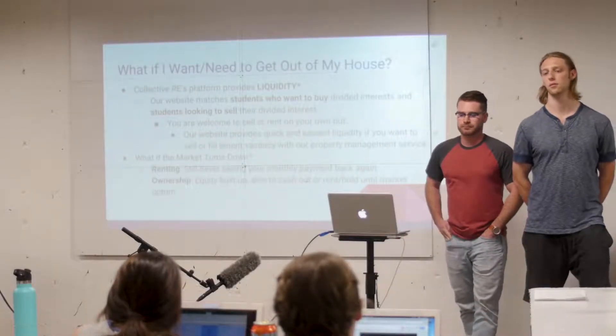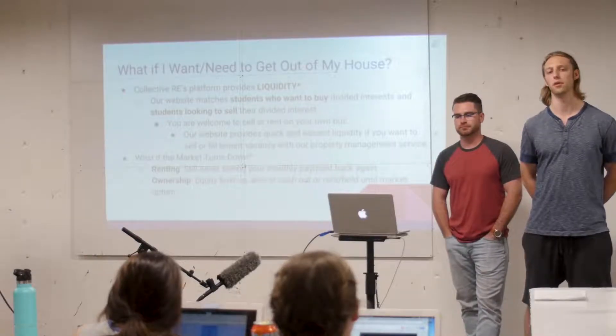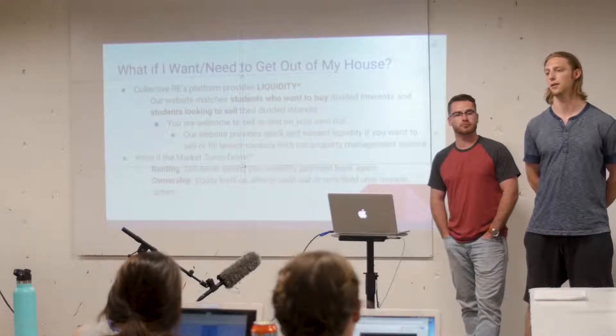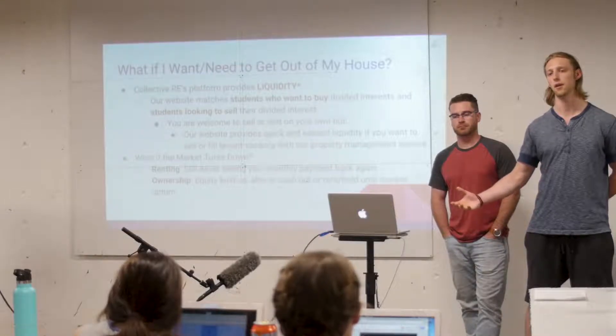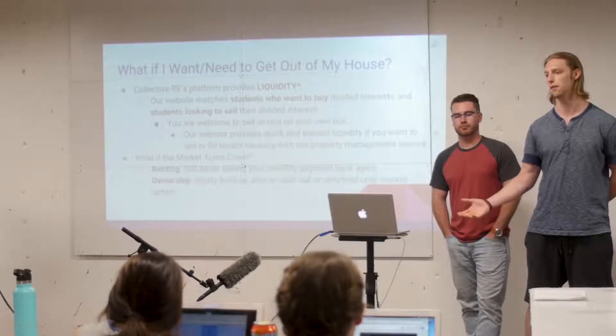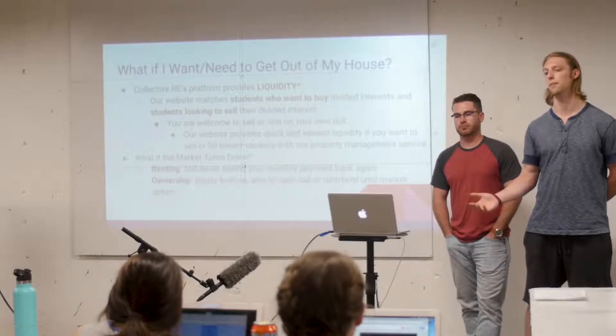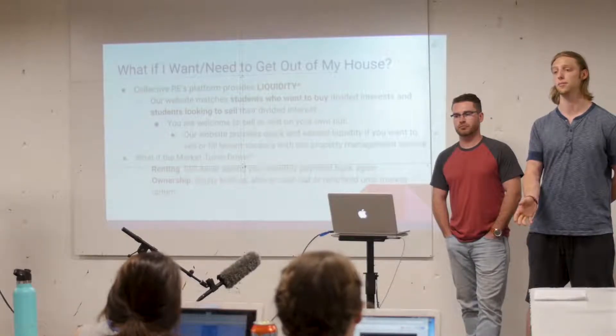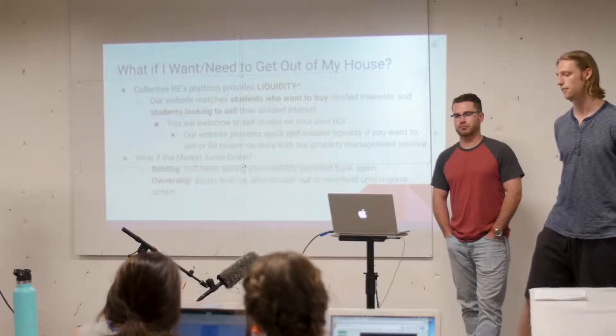So basically the good thing about a line of credit is you only get charged interest on the money that you're actually borrowing. And we definitely don't plan on having any excess funds lying around. And also what's cool about the line of credit is, you know, we go out and buy a property outright for a million dollars and then receive the down payment for say 15% at $150K and we can immediately pay back our investor, 15% of that million dollar line of credit.